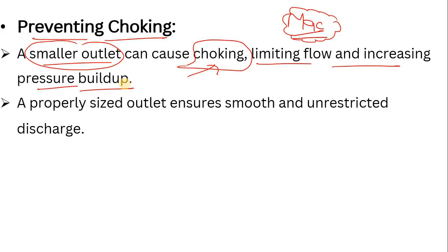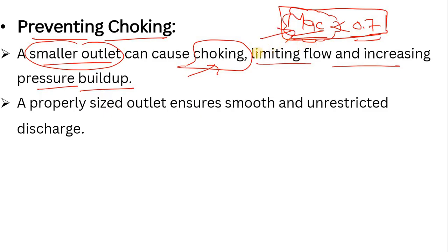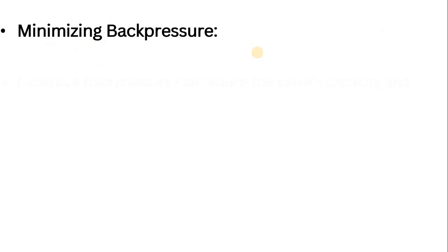If you properly size the outlet, it will ensure unrestricted discharge and the discharge will go smoothly. In the case of vapor or gases, the Mach number should be less than 0.7. The Mach number is the velocity at the outlet divided by the speed of sound. If it is less than 0.7, it is okay, but if it is greater, it could create the problem of choking. In the case of liquid, we can calculate the Mach number but it is not as significant as it is for vapor and gases.